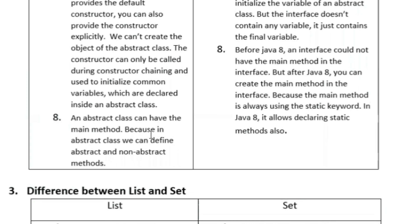An abstract class can have a main method because you can define abstract and non-abstract methods in it. Before Java 8 an interface could not have a main method, but after Java 8 you can create a main method in an interface because the main method uses the static keyword — and from Java 8 onward, interfaces allow declaring static methods. So from Java 8 onward an interface can also contain the main method.